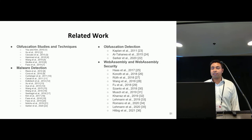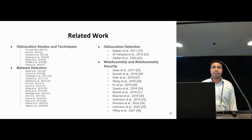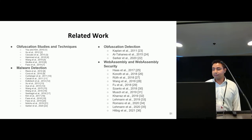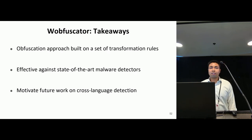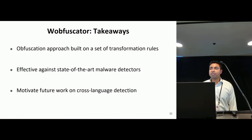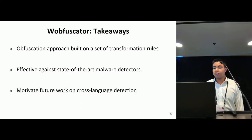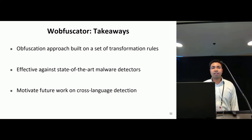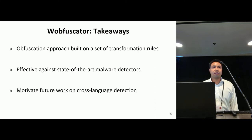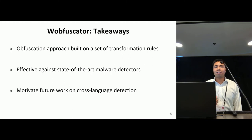Our work is closely related to existing work on obfuscation studies and techniques, malware detection, obfuscation detection, and WebAssembly security. In conclusion, we developed WafiSkater, a code obfuscation technique built on a set of transformation rules that opportunistically translates JavaScript code into WebAssembly. We show that WafiSkater is effective against state-of-the-art malware detectors, while preserving code semantics and with little additional overhead. We hope that our work helps motivate future effort in detecting cross-language malware. Thank you for your time, and I look forward to answering your questions.